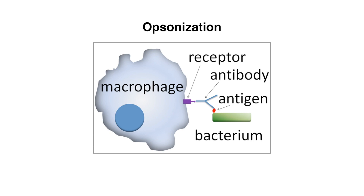Our immune system responds to encapsulated bacteria through a process known as opsonization, which you can see in this diagram here. In opsonization, an opsonin — or an antibody in this case — binds to a foreign pathogen, marking it for destruction by phagocytes like macrophages.